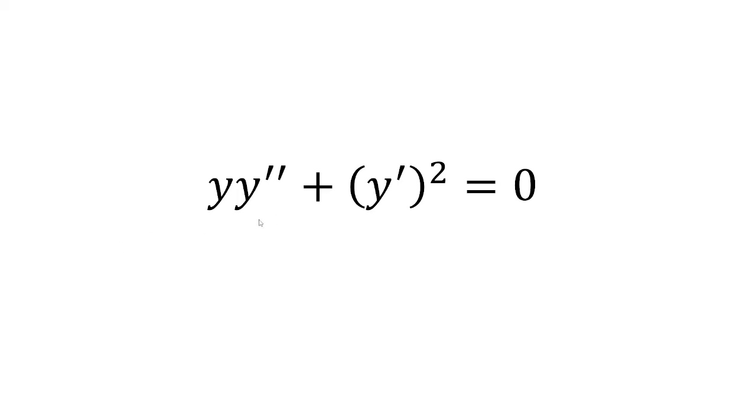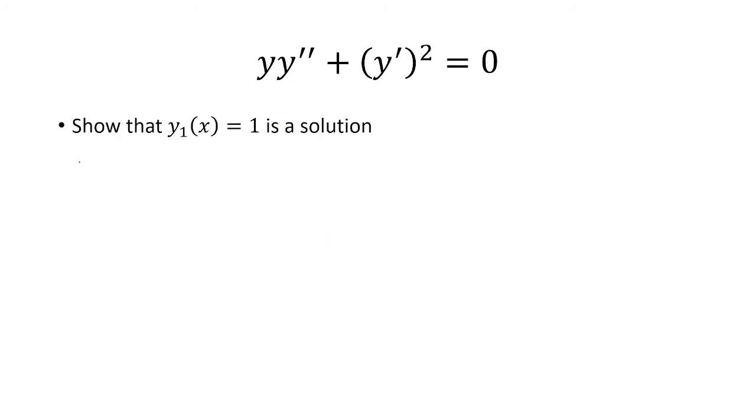Given the differential equation y times y double prime plus y prime squared equals 0, we want to show that the following solutions are indeed solutions. Let's start first with y sub 1 of x is equal to 1.